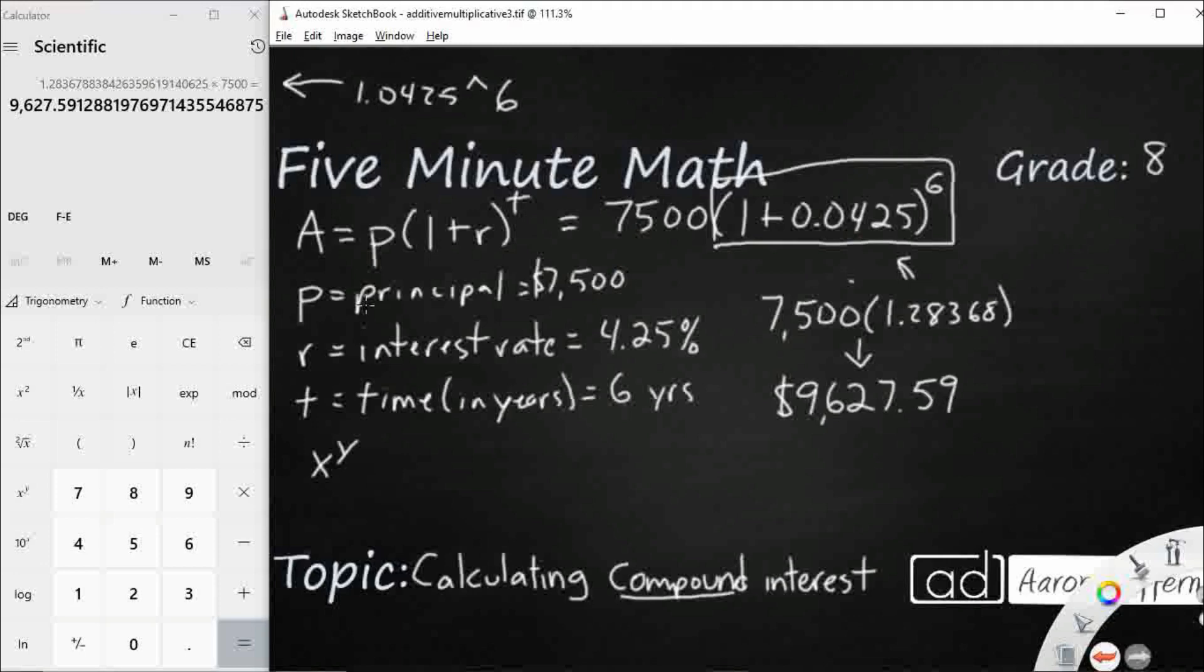Now, this is not the amount of interest that you earned. This is the A. So that's the new amount. So what they do is they give you the new amount, including the interest and the principal. So I grew from 7,500 down to this 9627.59. If I want the interest earned, I need to take away the principal.